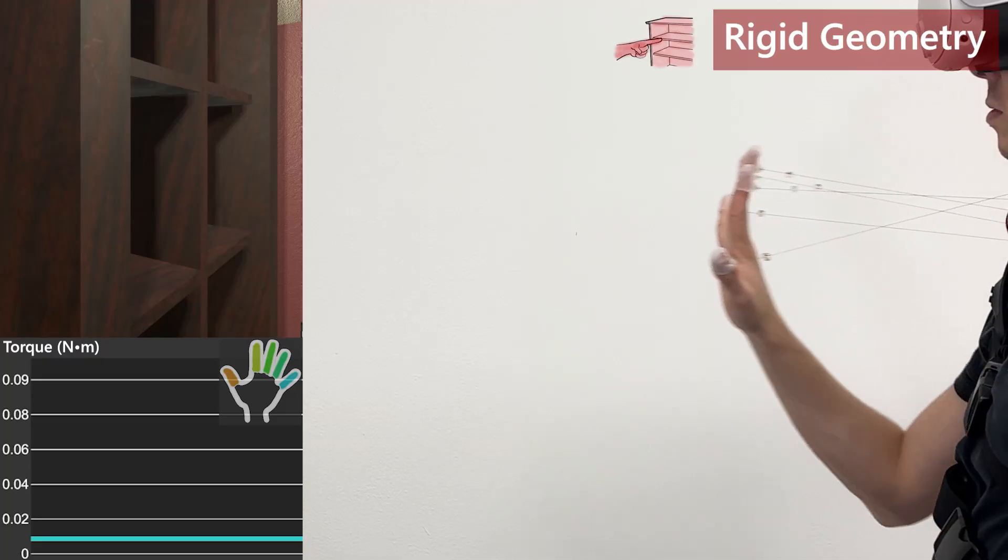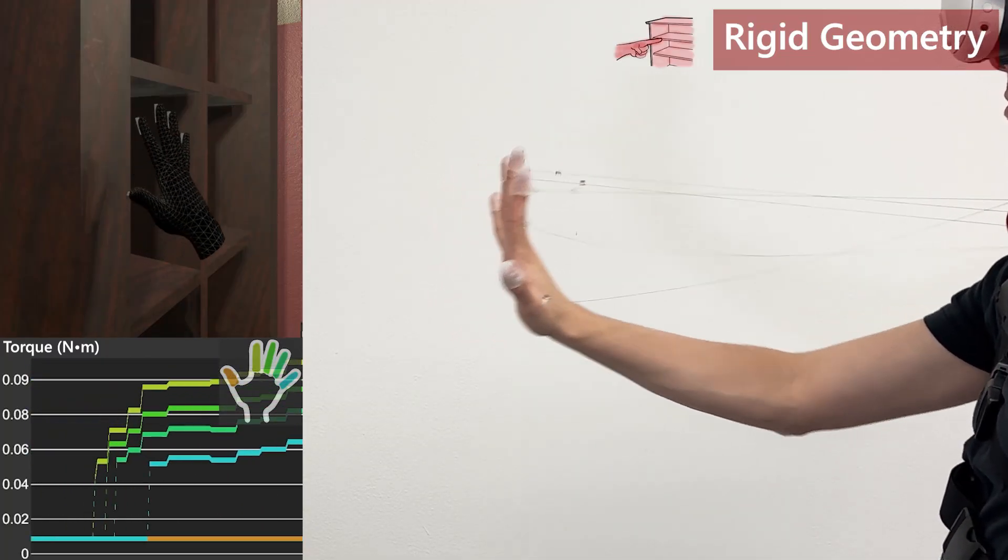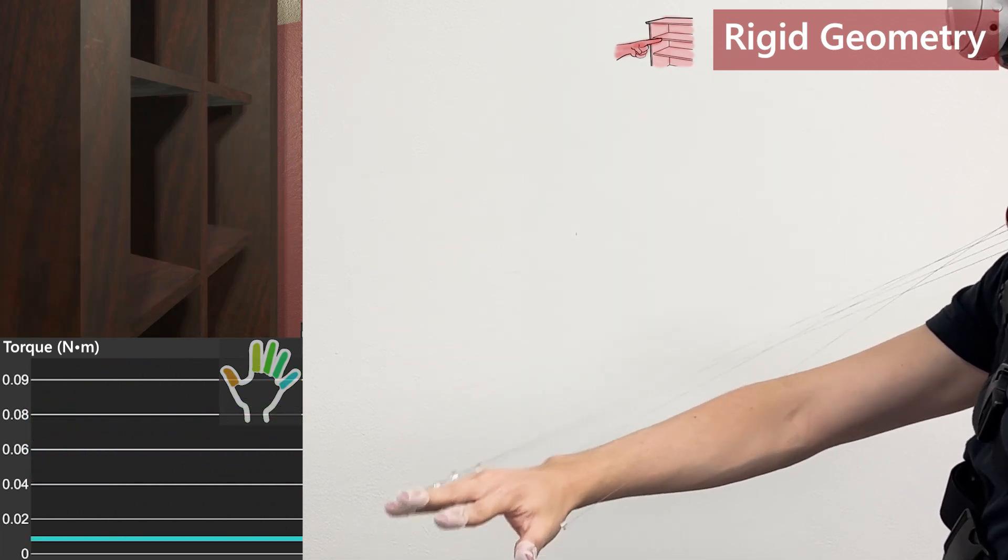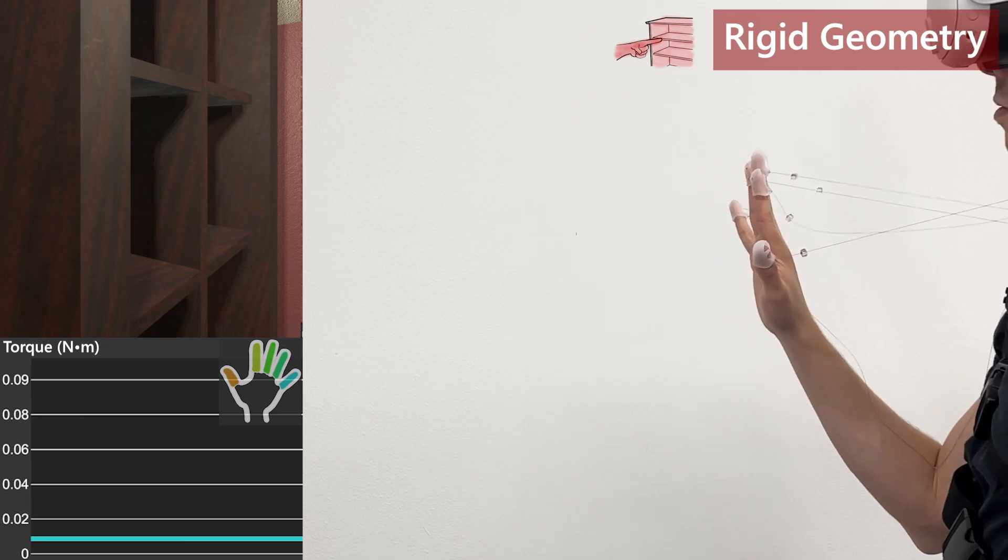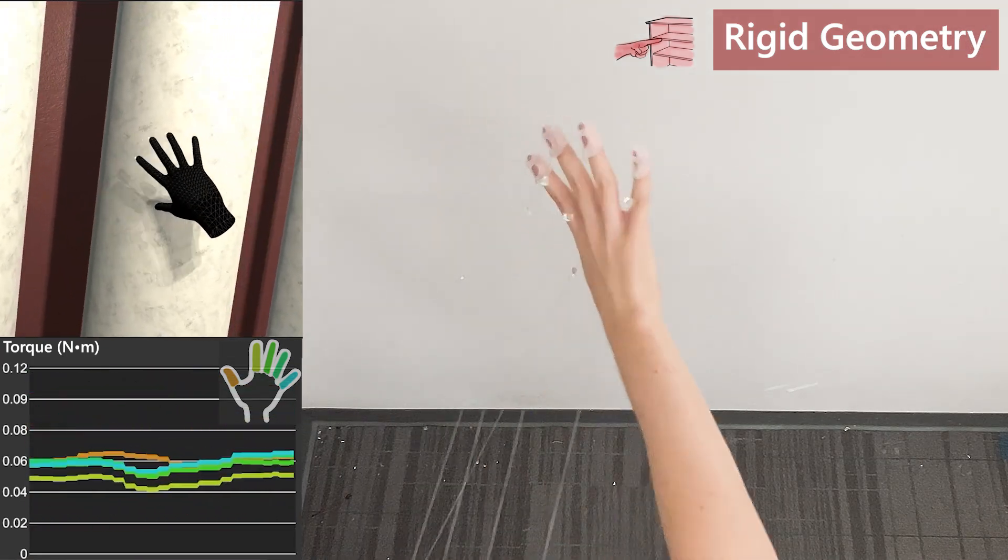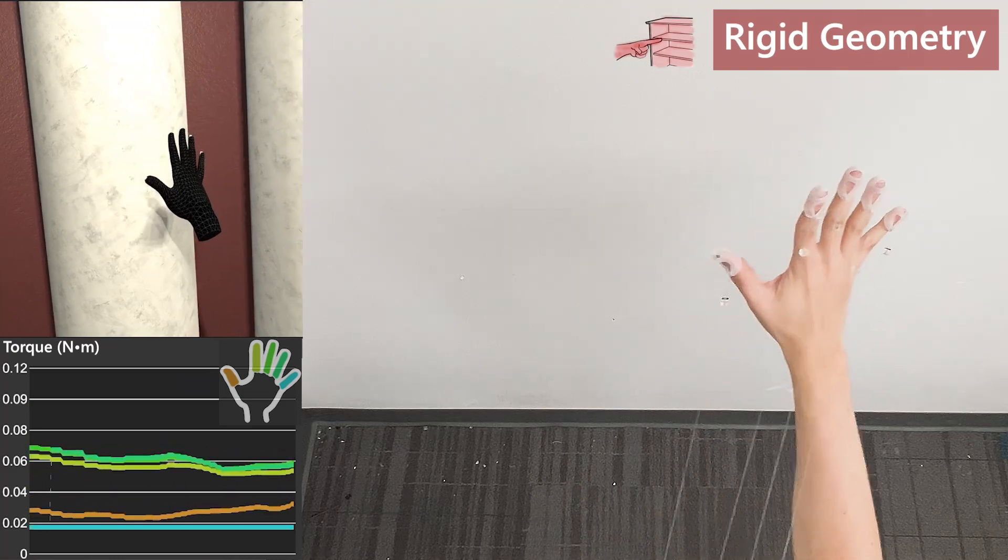Here you can see a user interacting with different objects and surfaces in a virtual scene. Each finger collision is handled independently, conveying gross surface geometry. Note that the users can translate their hands across the surface, and the fingers correctly follow the objects contours.